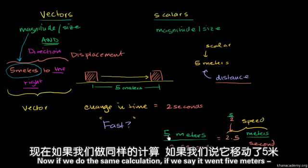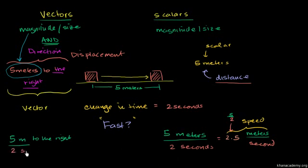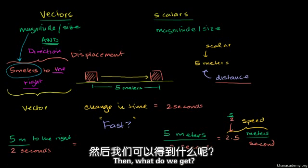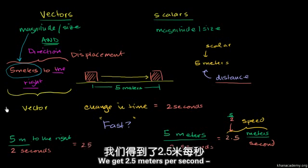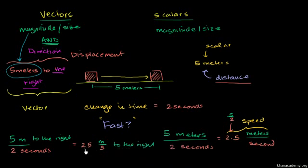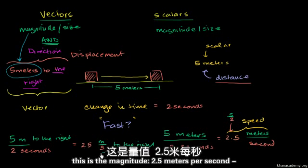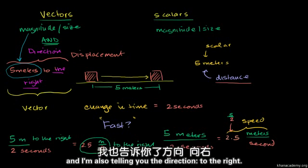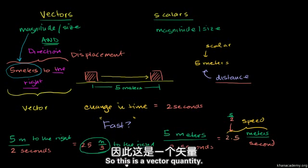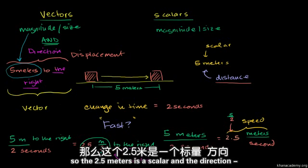Now if we do the same calculation but say it went five meters to the right in two seconds, then we get 2.5 meters per second to the right. Is this a vector or scalar quantity? I'm telling you the magnitude — 2.5 meters per second — and I'm also telling you the direction: to the right. So this is a vector quantity. When you specify both the speed and the direction, you are talking about velocity.